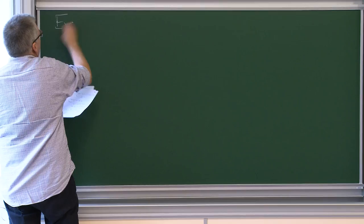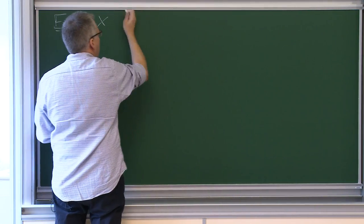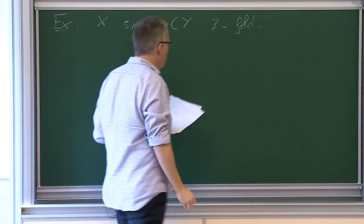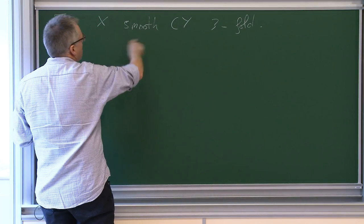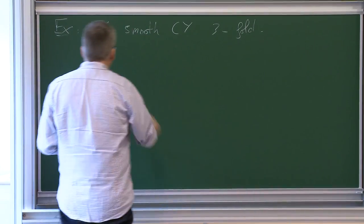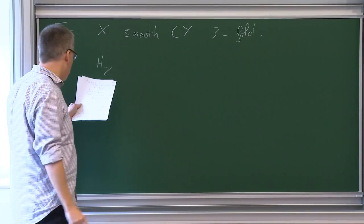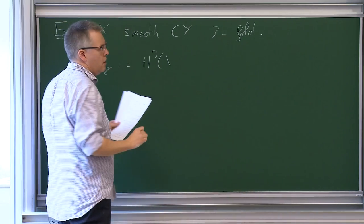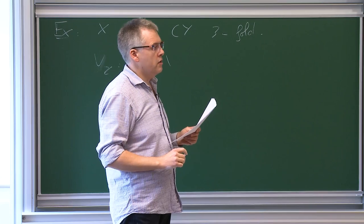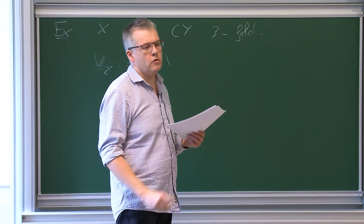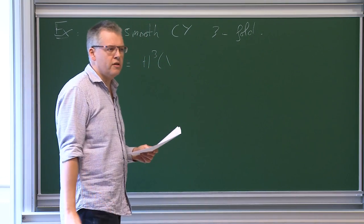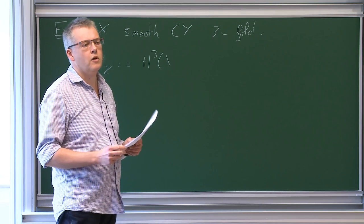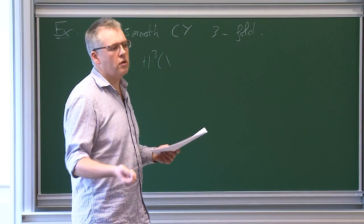Let me give one example where this conjecture recovers a conjecture well known to people working in Calabi-Yau's. Suppose that X is a smooth Calabi-Yau threefold — trivial canonical bundle, simply connected. You look at the cohomology of X in degree three. CM points are well defined: they are just points where the Mumford-Tate group is a torus, so it is automatically a torus in that case.